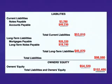Next, we subtract total liabilities from total assets: $152,400 minus $98,080, to get $54,320, which is owner's equity. Now we add total liabilities and owner's equity, $98,080 plus $54,320, to obtain $152,400.